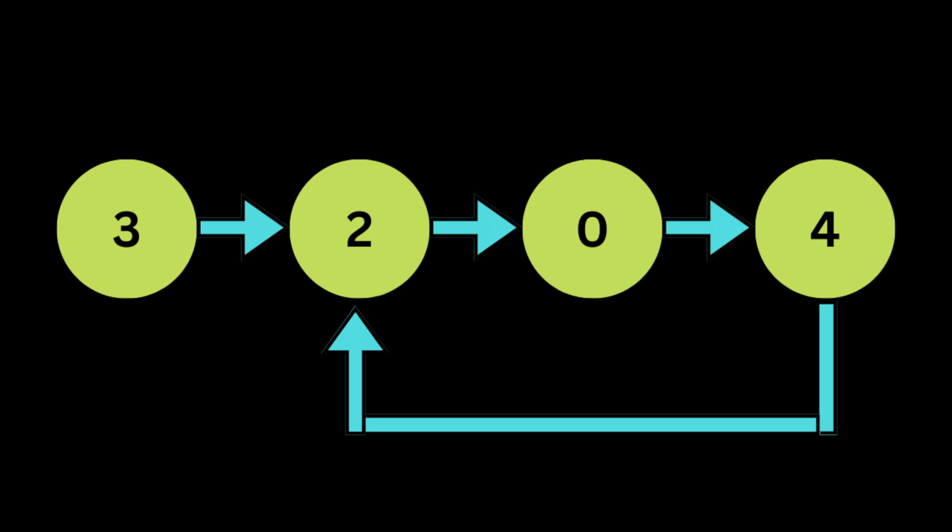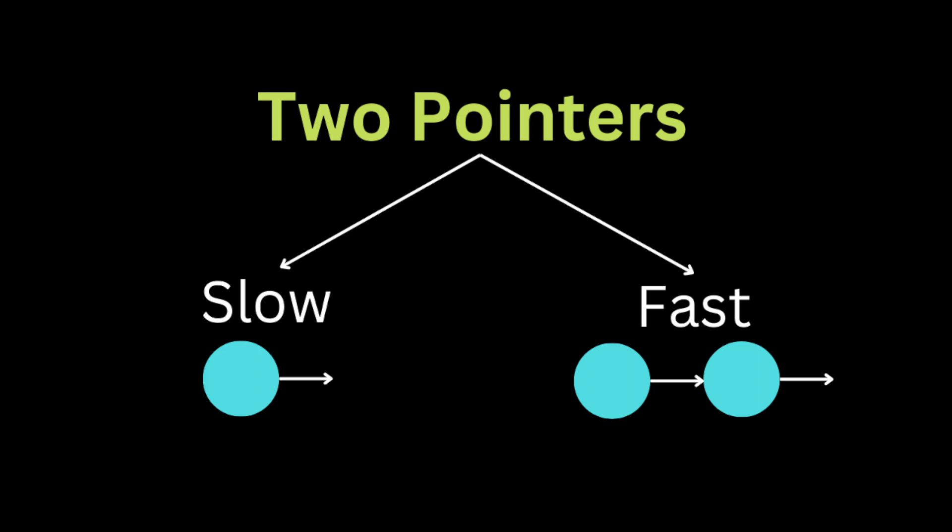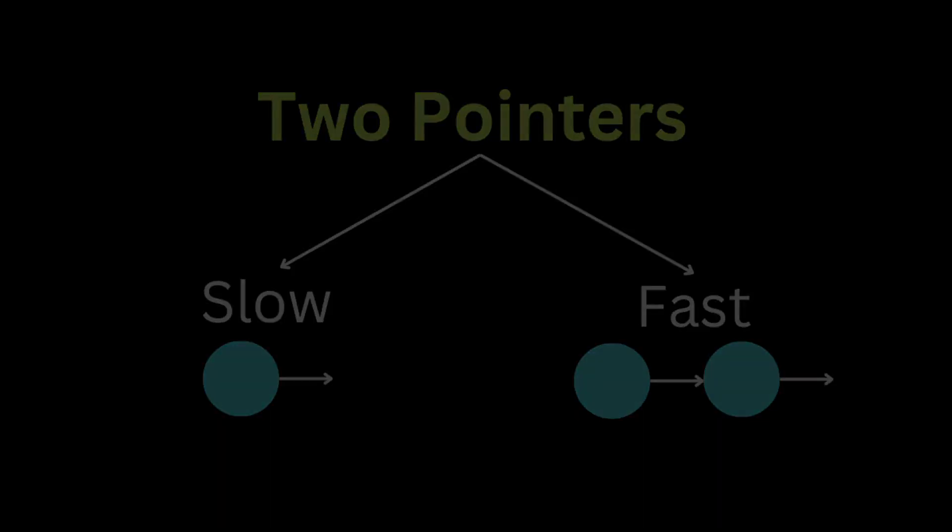To solve this problem we're going to use the two-pointer method, also known as the slow and fast pointer method. We'll create a slow and fast variable that are initially pointing to the head of the linked list, and we're going to iterate throughout the linked list. First we move the slow variable one step, or one node, then we move the fast variable two steps, meaning two nodes.